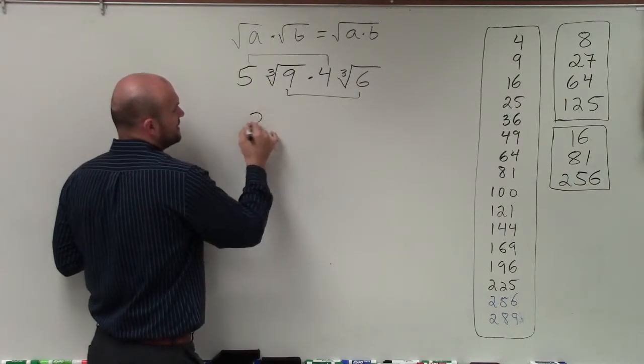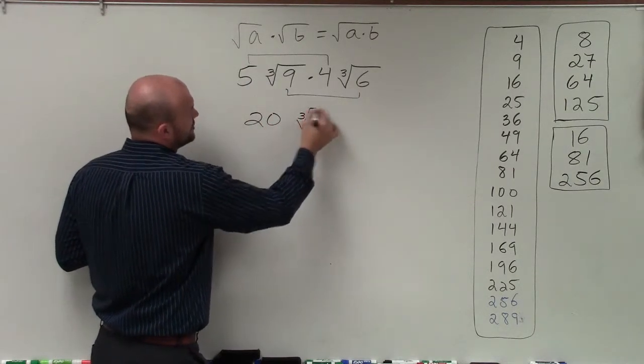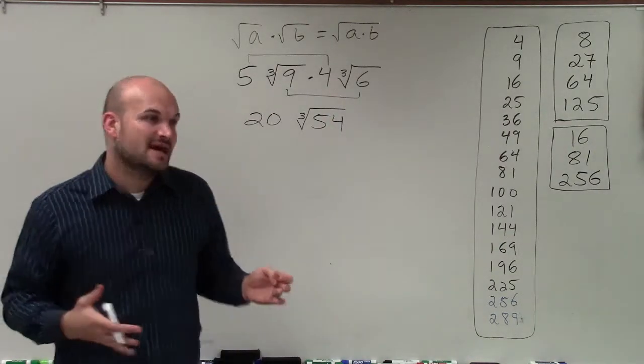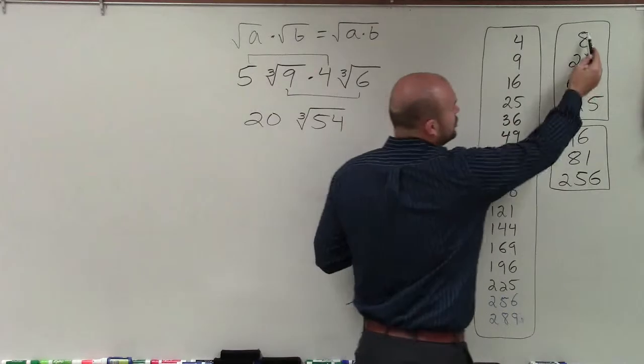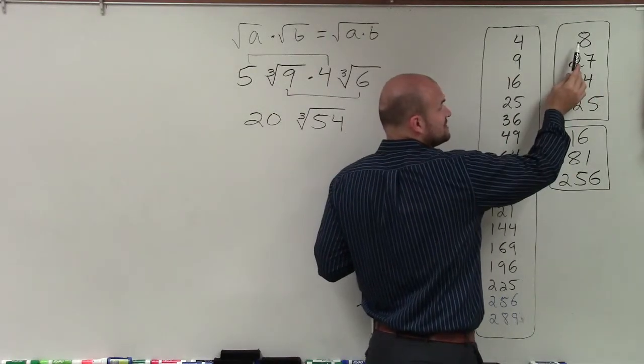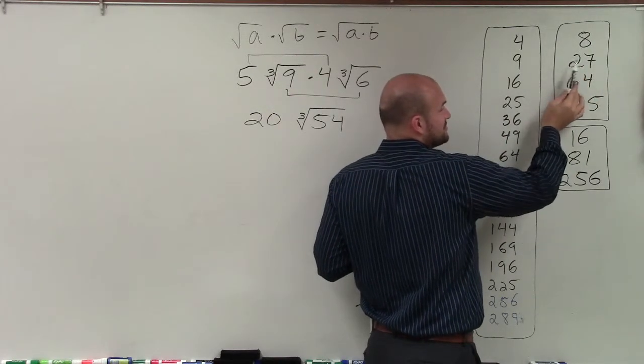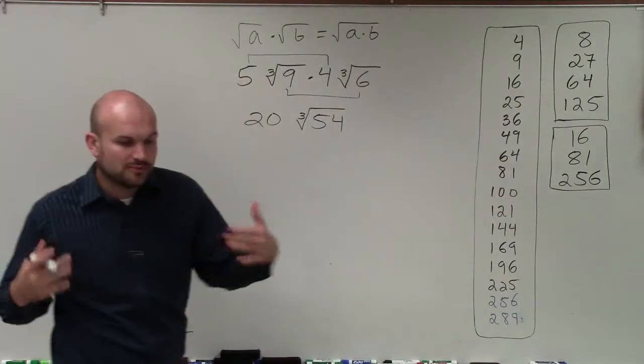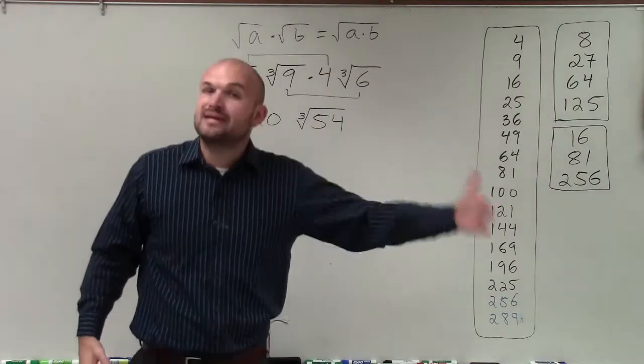Therefore, I now obtain 20 times the cube root of 54. Now I need to go back and see, can I rewrite this as any of my perfect cubed numbers? Well, this is 2×2×2 equals 8, 3×3×3 equals 27, 4×4×4 equals 64, 5×5×5 equals 125. Remember, the cube root is any number multiplied by itself 3 times.